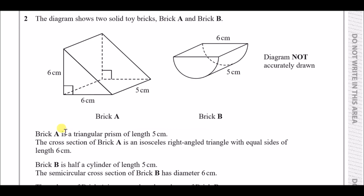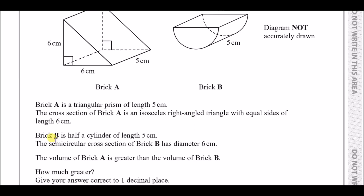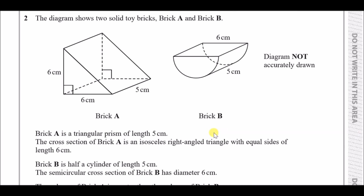Number two: the diagram shows two solid toy bricks A and B. Brick A is a triangular prism of length 5; the cross-section is an isosceles right-angle triangle with equal sides of 6. Brick B is half a cylinder of length 5; the semicircular cross-section has a diameter of 6. The volume of brick A is greater than brick B — find how much greater, to 1 decimal place. Just find both volumes and subtract.